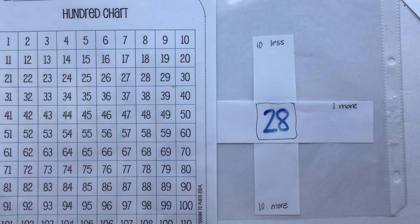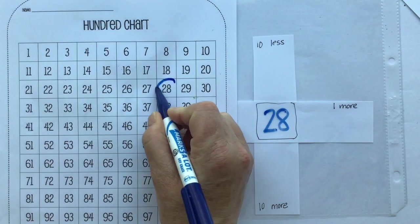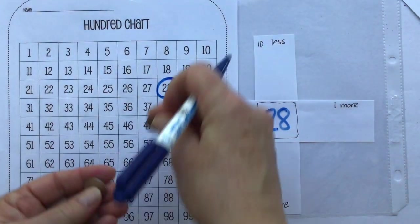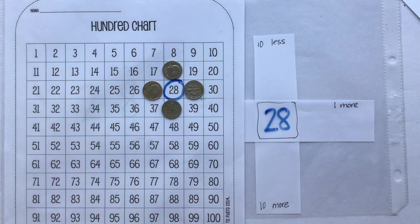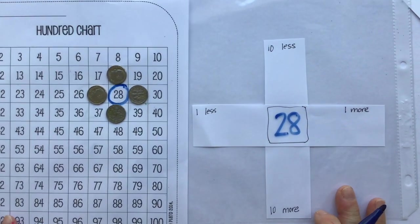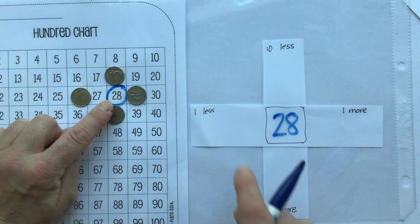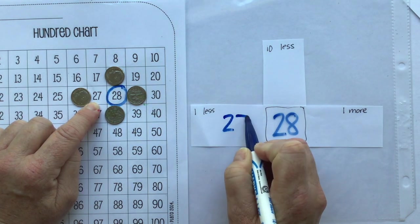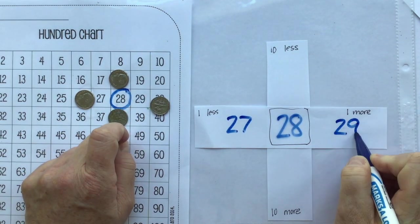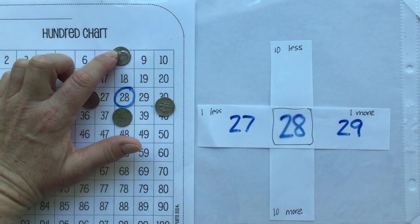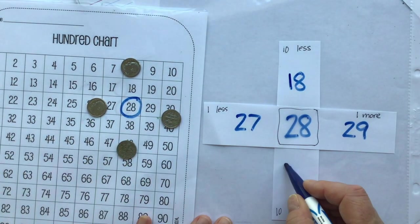Let's make this plus shape with the number 28. So we're just going one, two, three, four. That's the shape we're making. And now we can fill in our game board. So I'll start here. One less is 27. One more is 29. 10 less is 18. 10 more is 38.